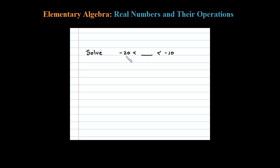Here we're asked to find a number such that negative 20 is less than that number. At the same time, that number has to be less than negative 10.